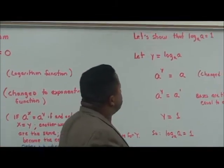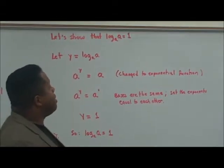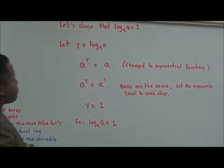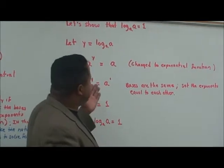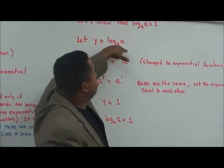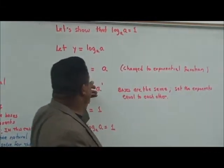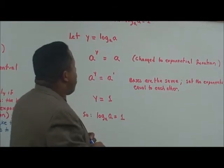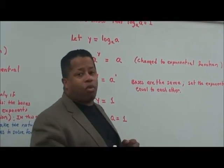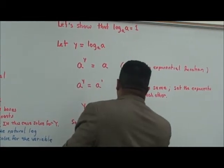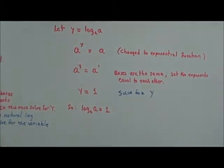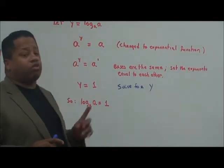Now let's show that log base A of A is equal to one. Let Y equal log base A of A. When we convert to an exponential function, we get A to the Y equals A to the first power. The bases are the same, so we can solve for Y easily — Y equals one. Therefore, log base A of A is equal to one.